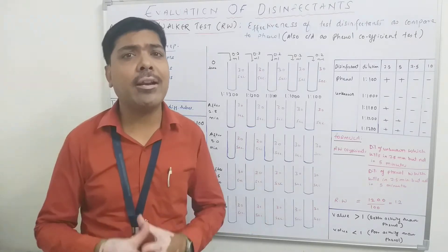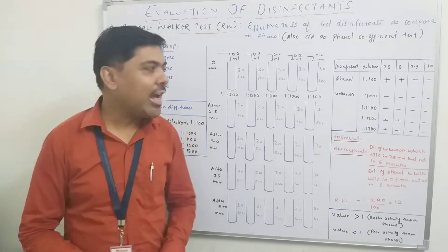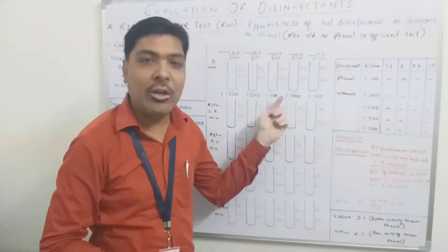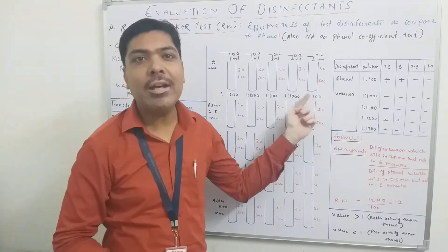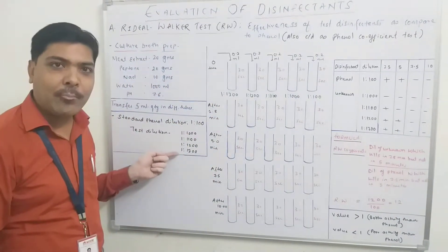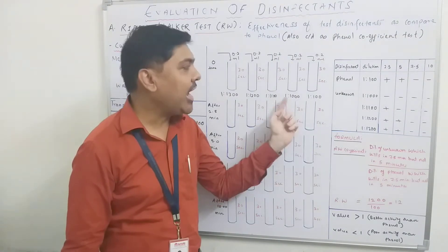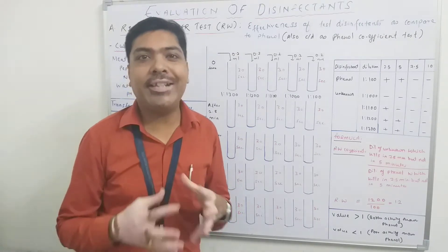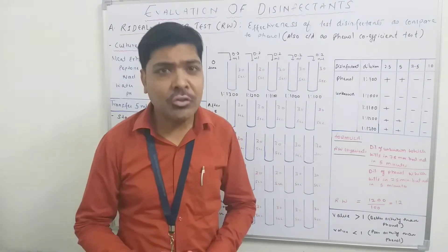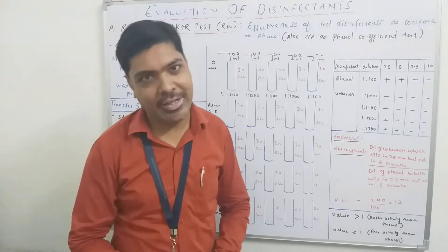When all these things are ready, the next step is to arrange various test tubes. As you can see in this diagram, in the first rack we have kept the test dilutions and the dilution of phenol. We put 1:1300 dilution in the first tube, then 1:1200, then 1:1100, and at the extreme right we put the selected dilution of phenol, which is 1:100. This is the first set of tubes to prepare before starting the Riddeal-Walker test.